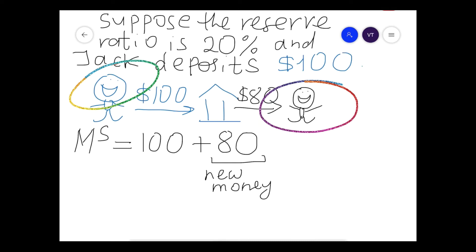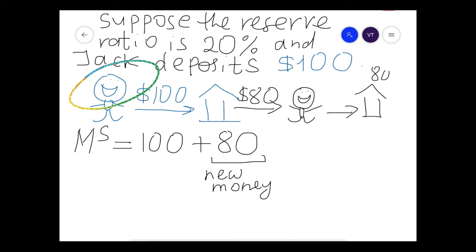But this process doesn't stop. The next bank that receives the $80 will also split the money — it will reserve 20% of $80 and lend the rest. This creates new loans, new deposits, and new money. The original deposit of $100 triggers a chain reaction of new loans and new deposits.